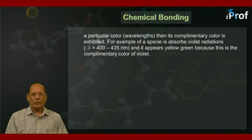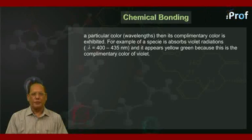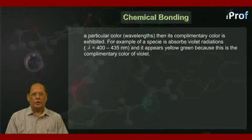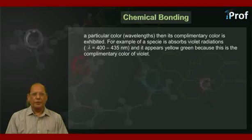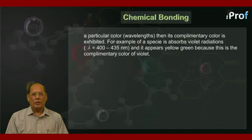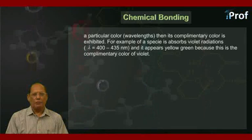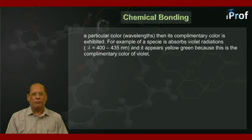Color the wavelengths corresponding to that, then the complementary color is exhibited. For example, if a species absorbs violet radiations lambda equal to 400 to 435 nanometer, and it appears yellow green because this is the complementary color of violet.